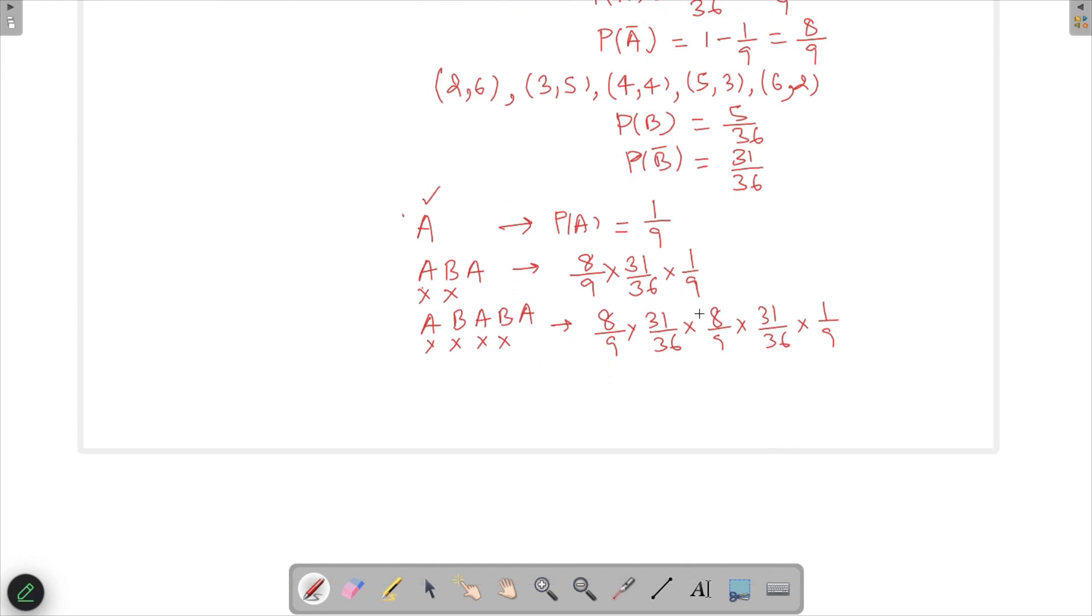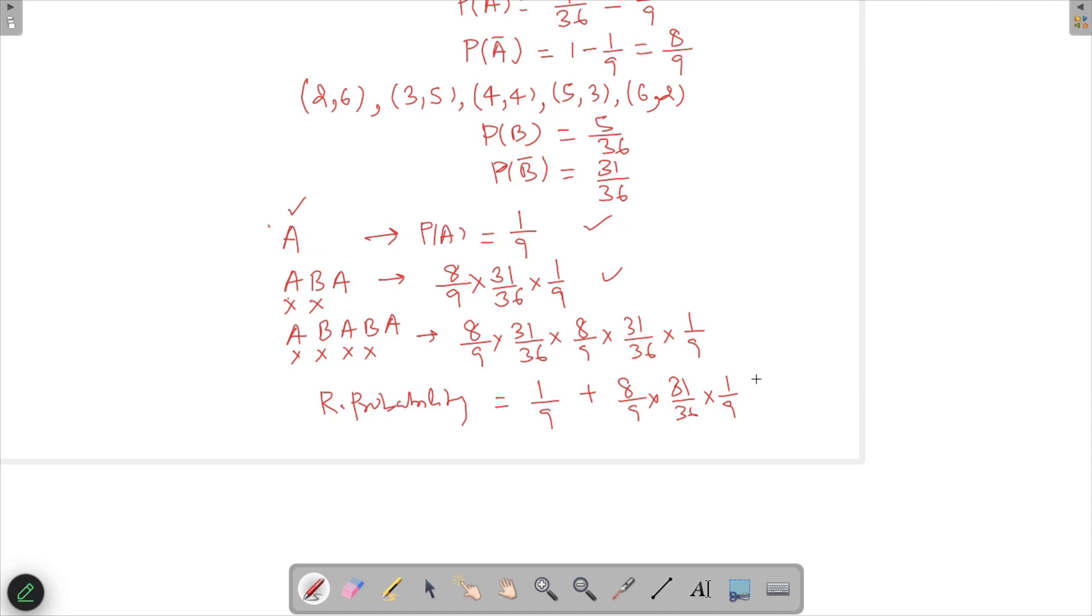This will become like an infinite GP. The required probability is 1/9 + (8/9 × 31/36 × 1/9) + (8/9 × 31/36)² × 1/9, and it keeps going up to infinity.